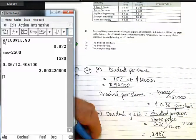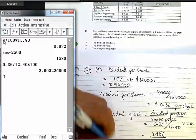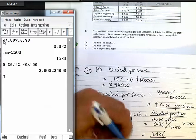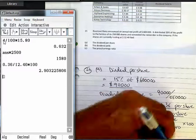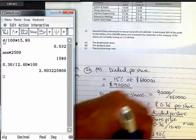Now, in part C, you're asked to find the price per earning ratio. And that's equal to the share price divided by the earnings per share.